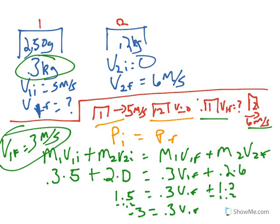Since V1F comes out positive, it means glider 1 is also moving to the right — same direction as initially, just slowed down. This concludes the elastic portion. In another video, I'll do the inelastic portion.